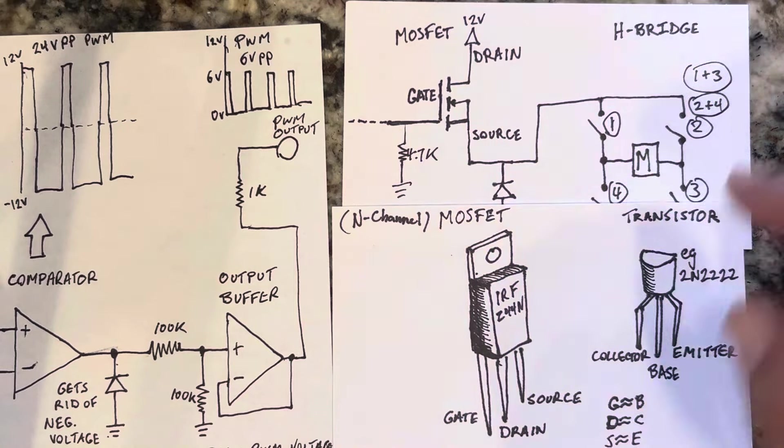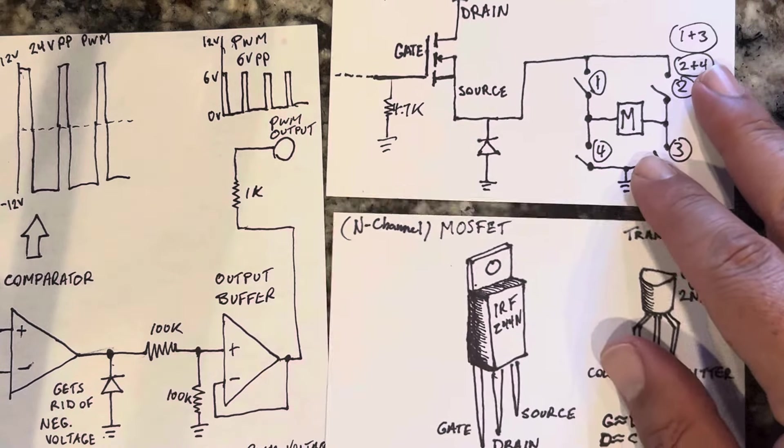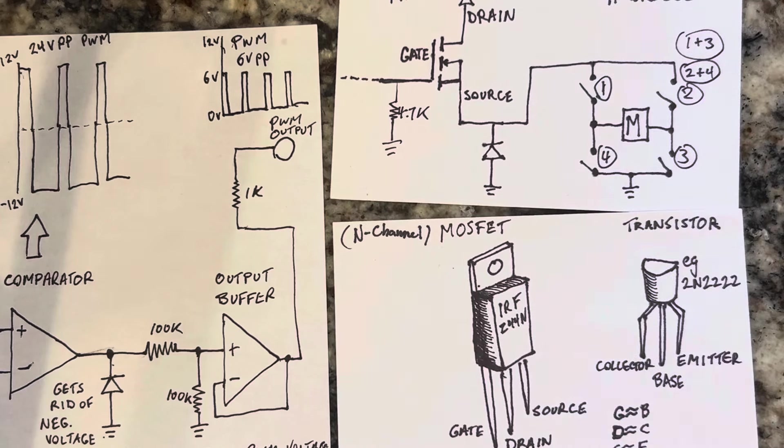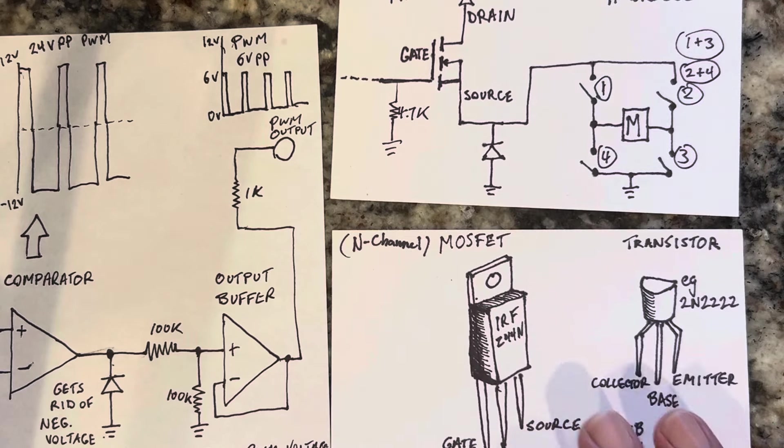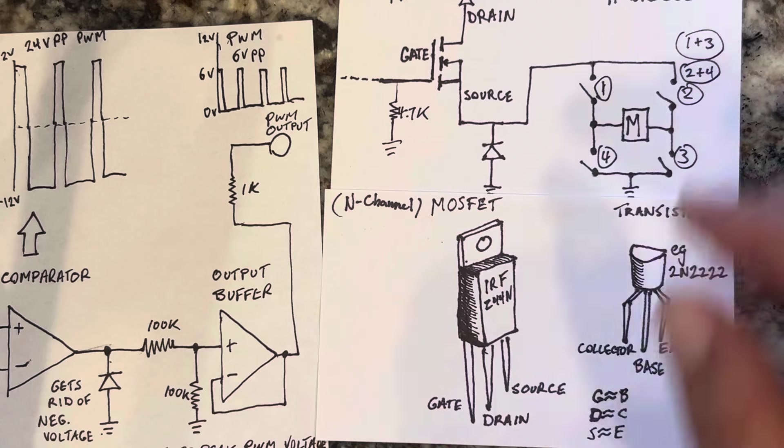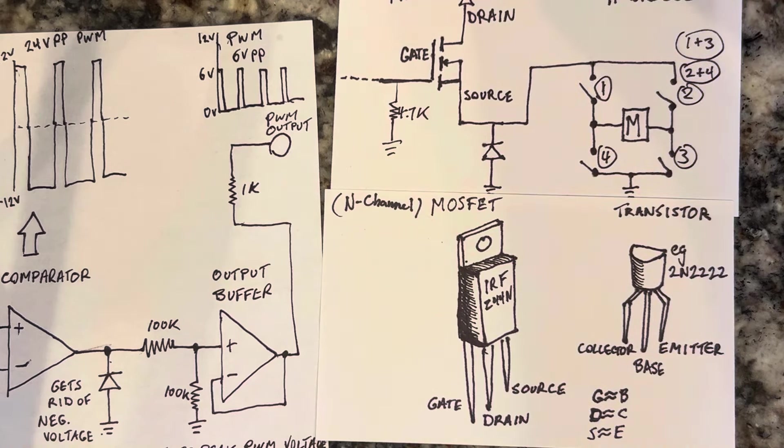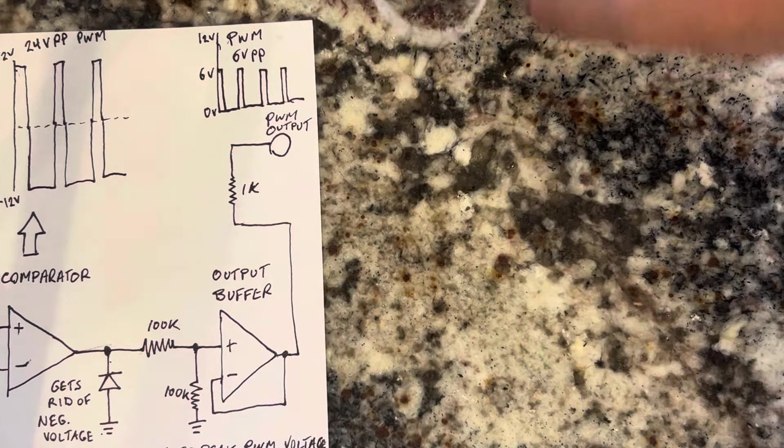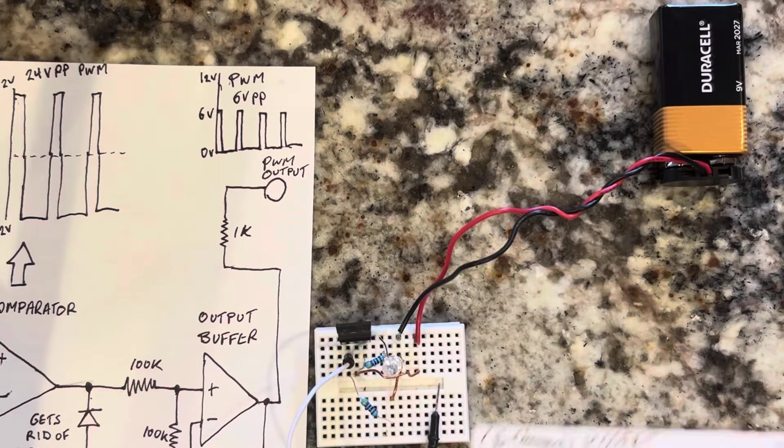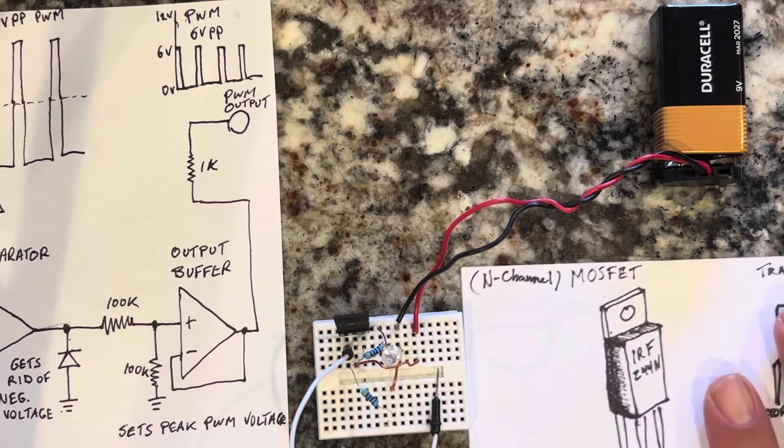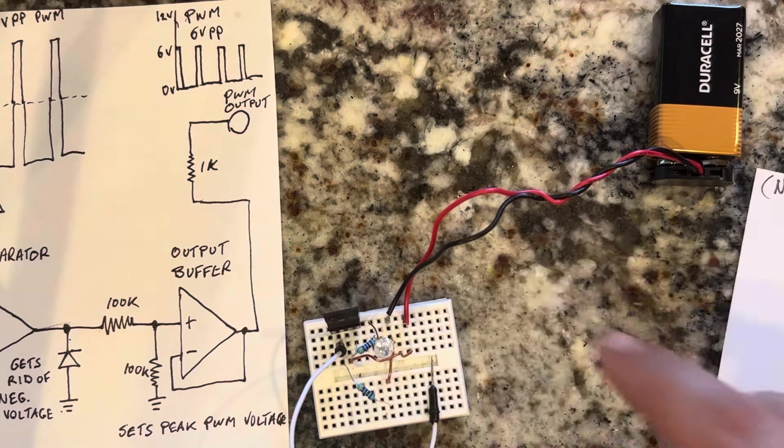So whatever your motor draws, it will gladly provide, as long as your power source is able to provide it. Your power supply, and the MOSFET will handle it. And the more load it handles, the hotter it gets. So sometimes you need a heat sink on them. That's why they have the little screw here for the heat sink.